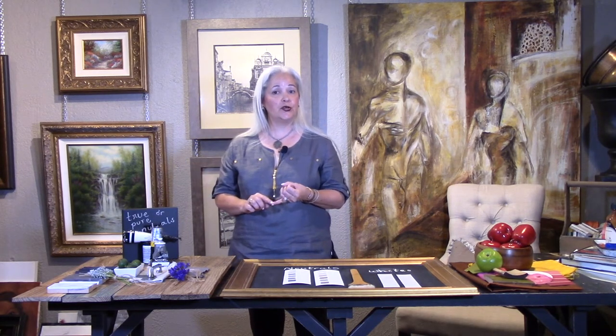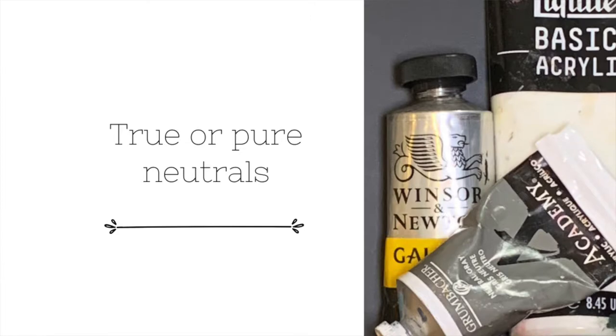And what about neutrals? The only pure neutrals that we have will be pure or true white, pure or true black, or pure or true grey. They don't have any undertones in the paint. An undertone is the color from underneath the paint that affects the overall hue. Every neutral has warm or cool undertones.